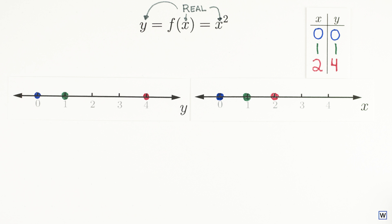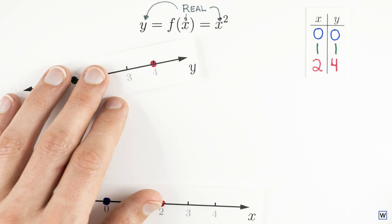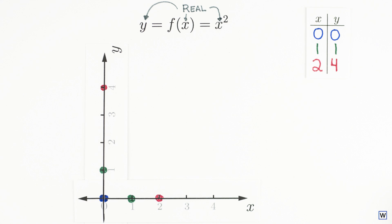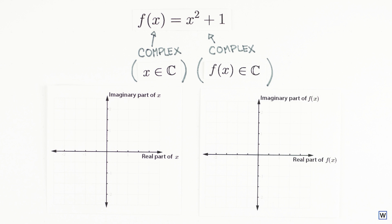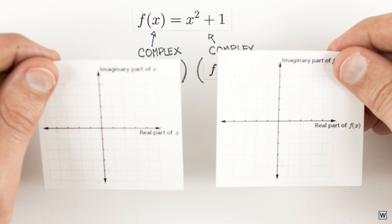We could try to fit our input and output planes together somehow, as we did with our number lines for real-valued functions, but we quickly run into a pretty serious issue. As you likely know, the universe we live in has three spatial dimensions. So there's no way to fit the four spatial dimensions we need into a single structure that our brains can comprehend. We simply run out of dimensions.